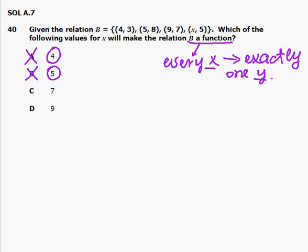Let's take a look at the next possible answer, 7. If we substitute 7 and analyze all of them: 4 is paired up with 3, 5 with 8, 9 with 7, and 7 with 5. What it means is that for every x in this relation, there is exactly one y. Therefore, answer C is the right answer.